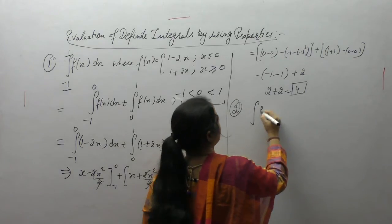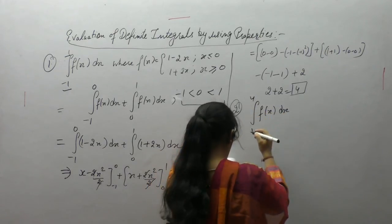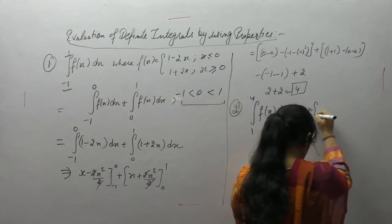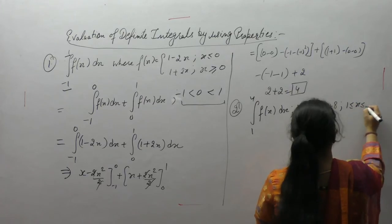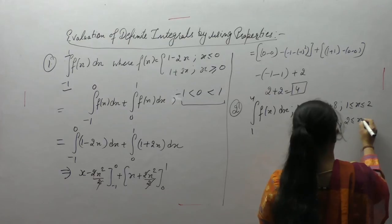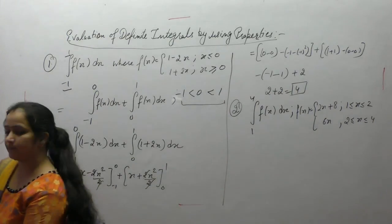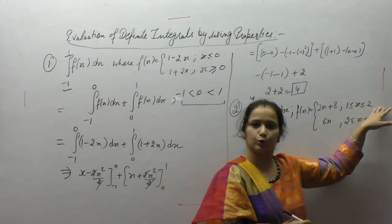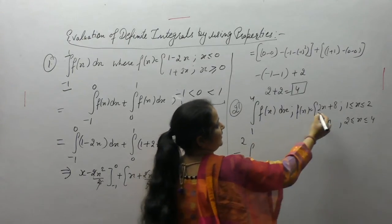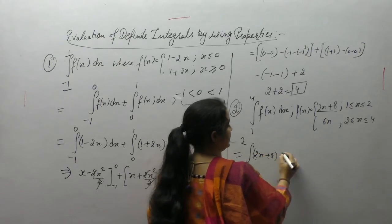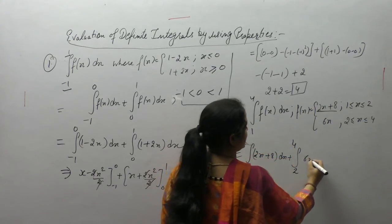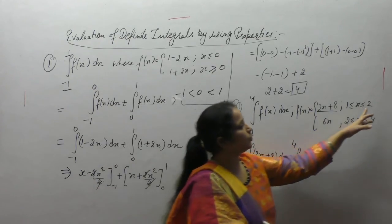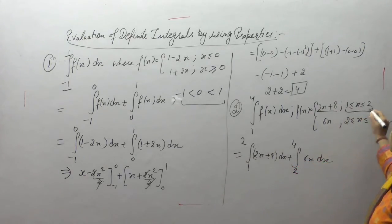The next question is: find the integral from 1 to 4 of f(x) dx, where f(x) is 2x plus 8 when x lies between 1 and 2, and 6x when x lies between 2 and 4. We have two sub-intervals with different function definitions.